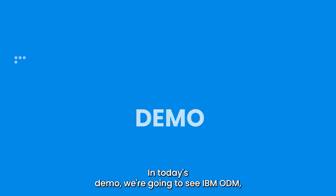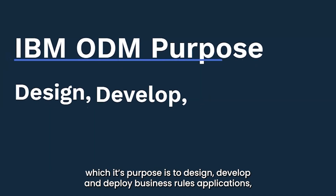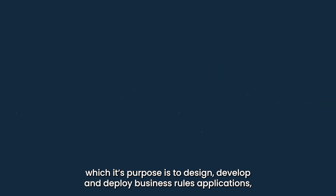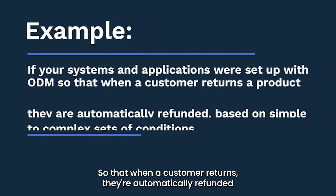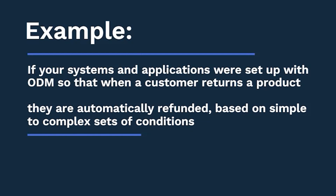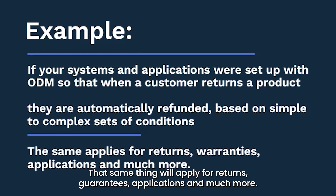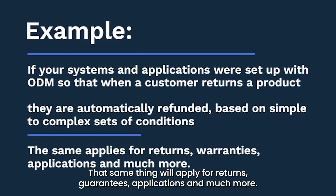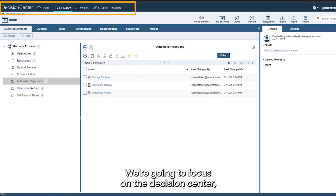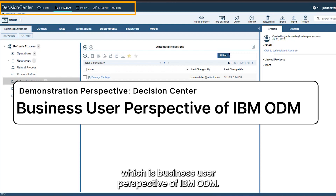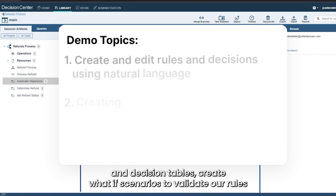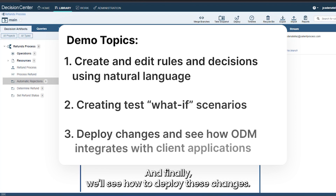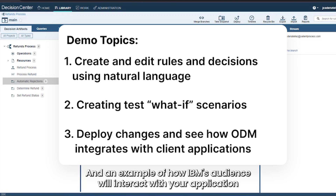In today's demo we're going to see IBM ODM, whose purpose is to design, develop, and deploy business rules applications. For example, if your systems were set up with ODM, when a customer returns a product they're automatically refunded based on simple sets of conditions. That same thing applies for returns, guarantees, and much more. We're going to focus on the Decision Center, which is the business user perspective of IBM ODM, where we'll create and edit rules and decision tables, create what-if scenarios to validate our rules, deploy changes, and see how IBM ODM interacts with your application in real time.